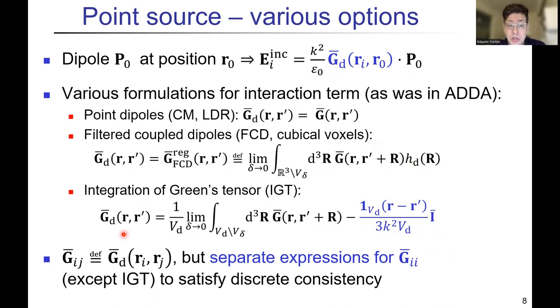In general, we can use the expression that comes from the DDA formulation. The interaction of the dipole G_ij is just this expression, a natural one. But we usually use separate expressions for the diagonal terms, and that indicates there is some inconsistency going on here, except for IGT. IGT is actually, you just use it for any combination of dipoles, and that's a good sign.